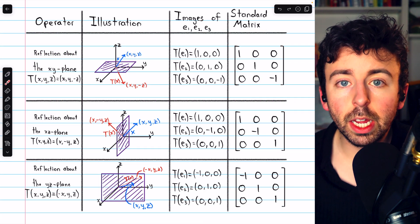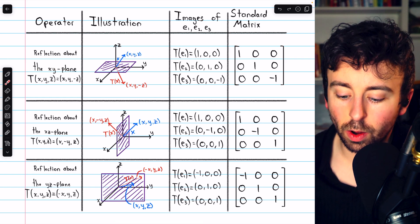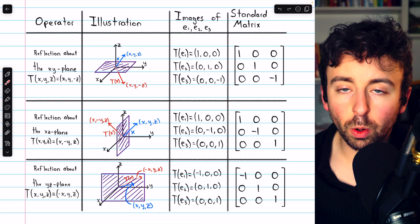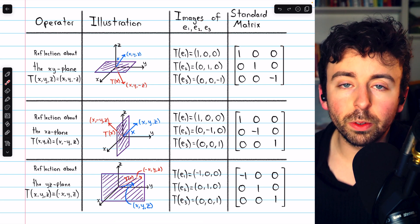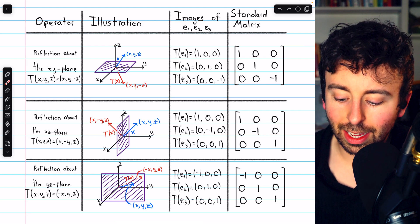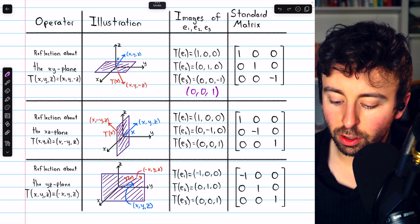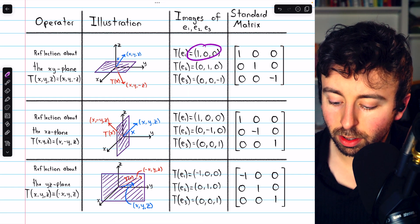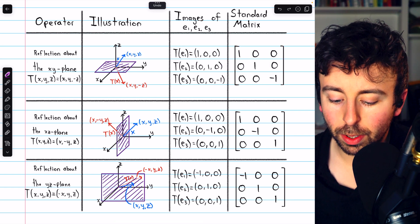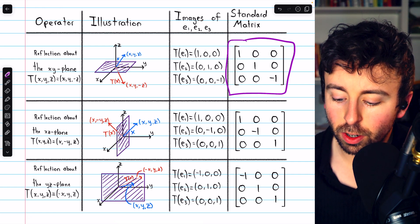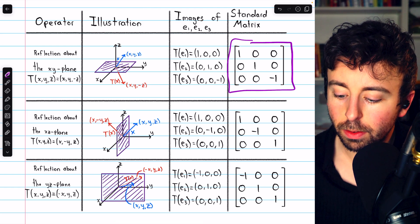In 3D space, R-cubed, things work pretty similarly. Reflection about the x-y-plane has the effect of just negating the z-coordinate, which we can see in the picture. To find the standard matrix, we take the standard basis vectors from R³ and plug them into the transformation. (1,0,0) and (0,1,0) don't get changed, but (0,0,1) gets transformed into (0,0,-1). We take the images of the standard basis vectors to build the columns of the standard matrix. So reflection about the x-y-plane in R³ is represented by multiplication by this standard matrix.